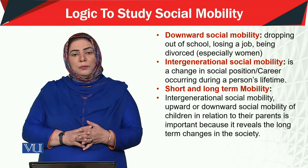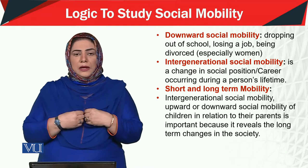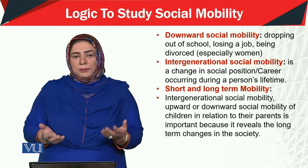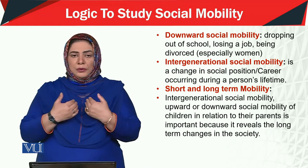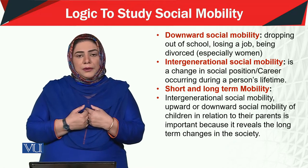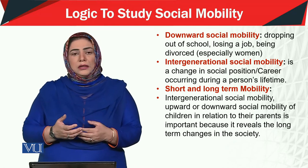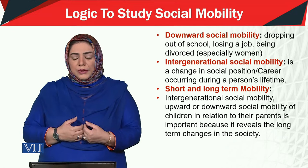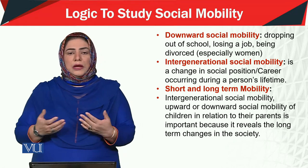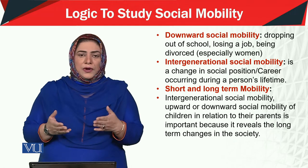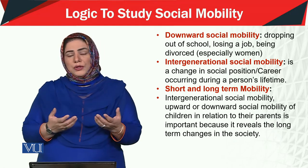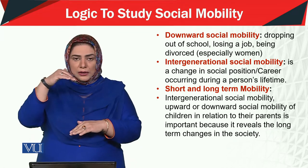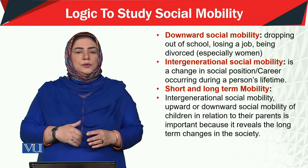Being divorced — especially for women — is another example. In downward mobility, some factors are personal and some are social, involving society and family. For instance, a child who was studying dropped out of school, or failed in college. Similarly, if someone had a good job and lost it for any reason, or if someone's marriage ended — all these factors at the individual and social level bring a person's status downward, which is called downward social mobility.